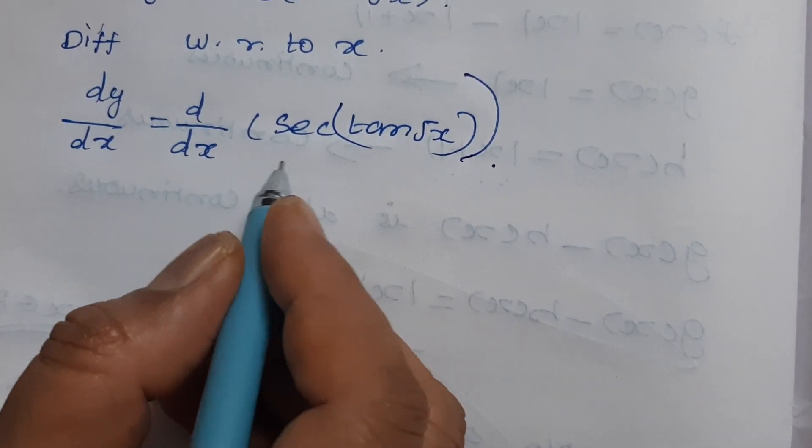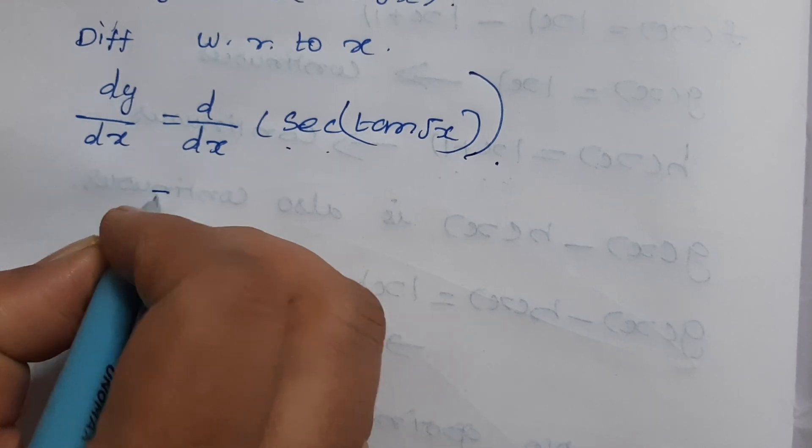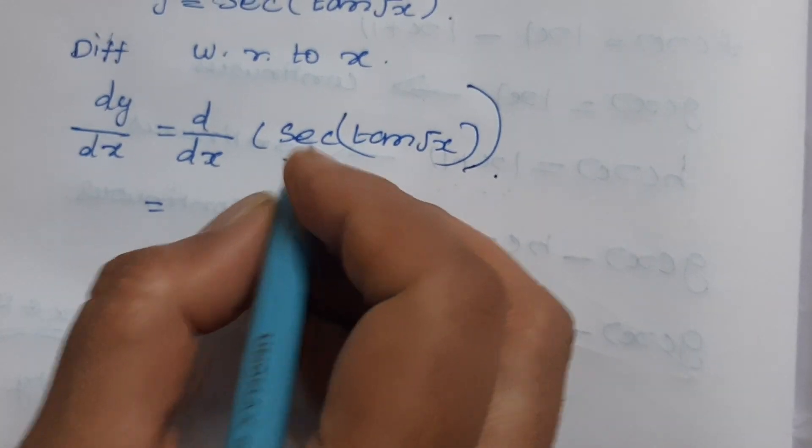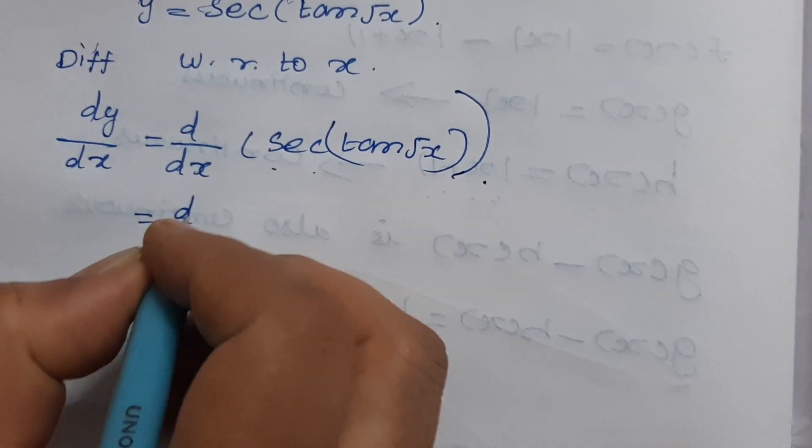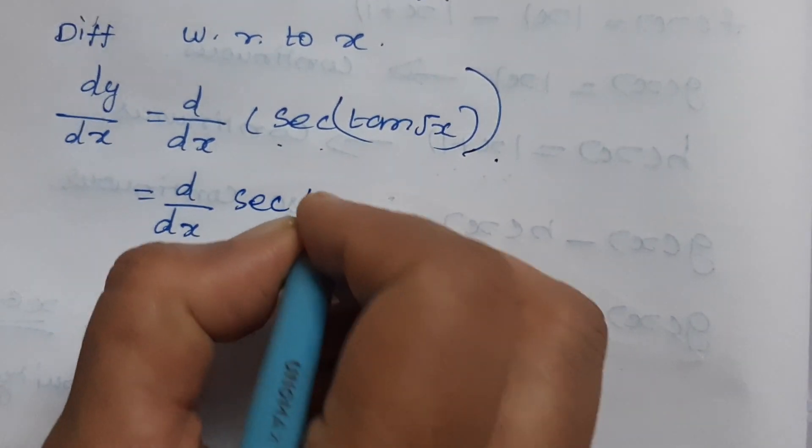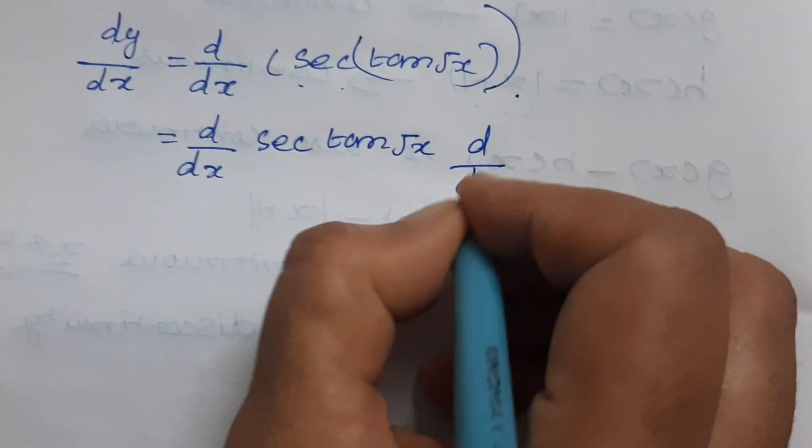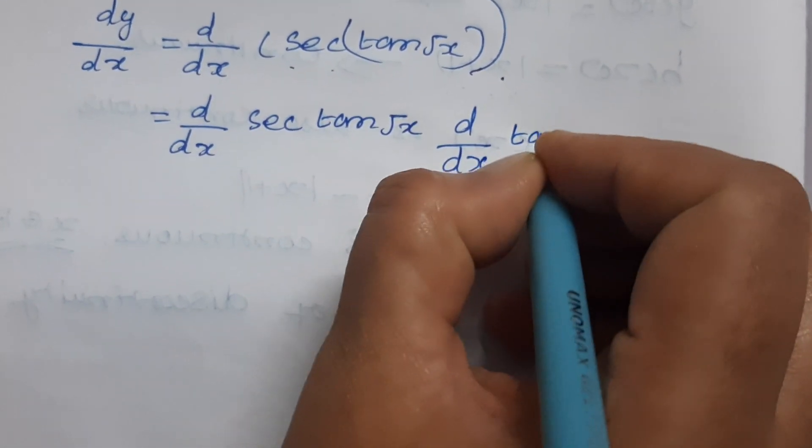For sec(x), what is the differentiation? Secant x tan x. So first, d/dx of sec(tan√x), then d/dx of tan√x.